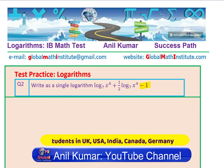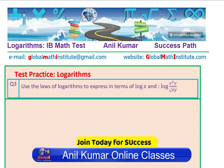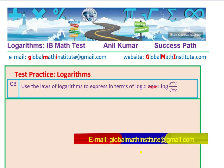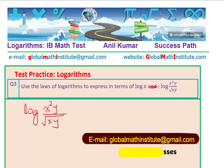This minus 1 here makes the problem slightly difficult, and this kind of question is seen in IB test papers. Here is question number 3, which is kind of the reverse of what we just did. Here we need to expand: log of x squared y over square root of xy. Basically, you need to expand what log of x squared y over square root of xy can be written as.